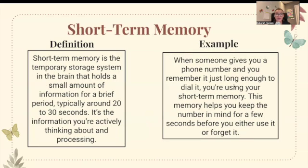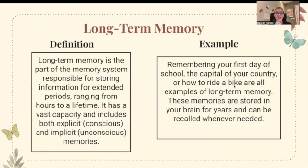Short-term memory is the temporary storage system in the brain that holds a small amount of information for a brief period, typically around 20 to 30 seconds — it's the information you're actively thinking about and processing. For example, when someone gives you a phone number and you remember it just long enough to dial it, you're using short-term memory. It helps you keep information in mind for a few seconds before you either use it or forget it.